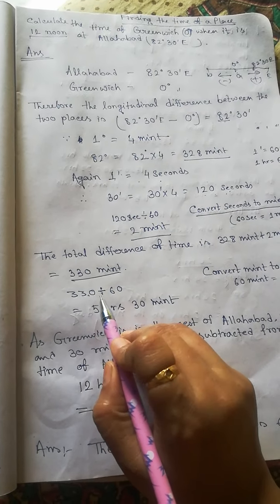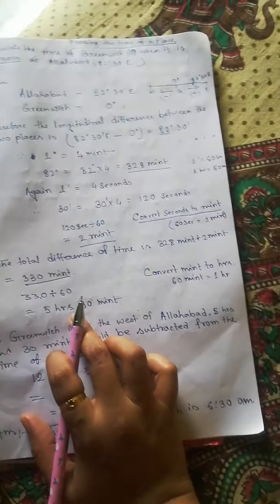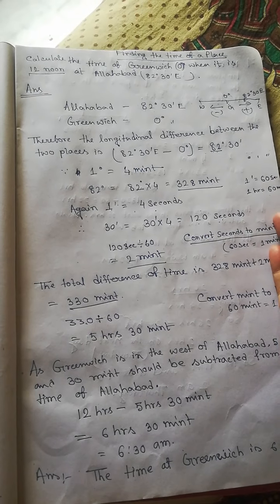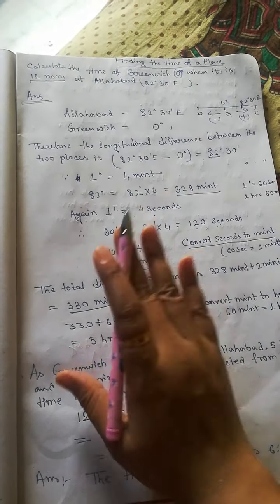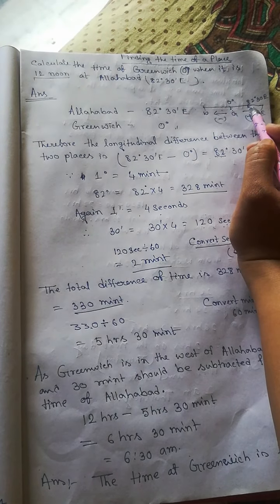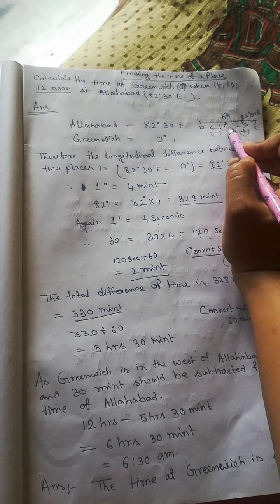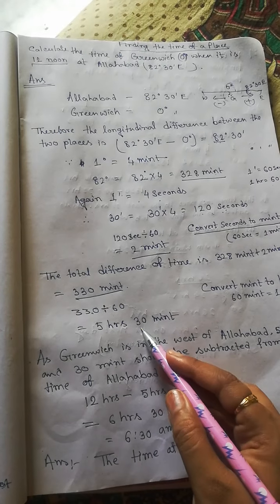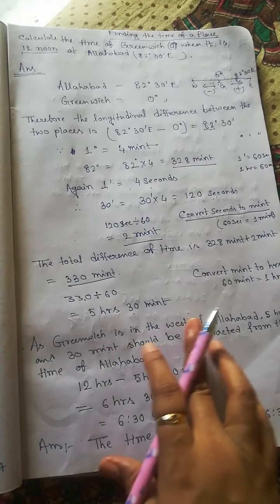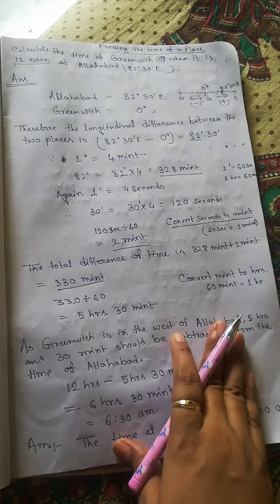You should also know that if a place is located in the eastern hemisphere, the time will be added, and if it is located in the western hemisphere, the time will be subtracted. Since Greenwich is to the west of Allahabad, 5 hours 30 minutes should be subtracted from the time of Allahabad.